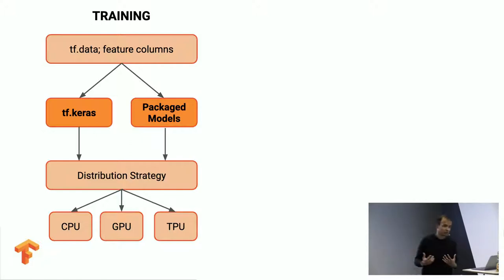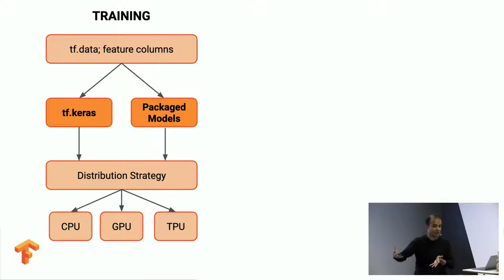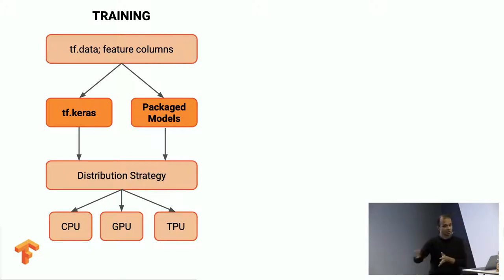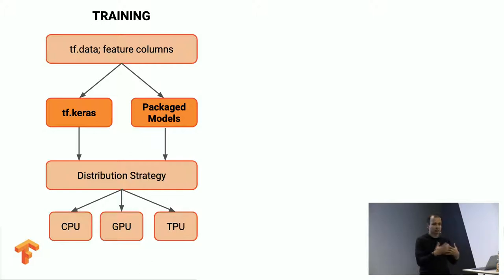With PyTorch, there is a limitation — this distribution cannot be directly done. PyTorch has some limitations which TensorFlow handles extremely well. When you write TensorFlow code, it actually becomes production-ready straightaway. You can write code from a research paper and bring it straight into production with a TensorFlow serving pipeline. TensorFlow also has very nice, well-written documentation. PyTorch is trying to catch up, but it's not there yet.